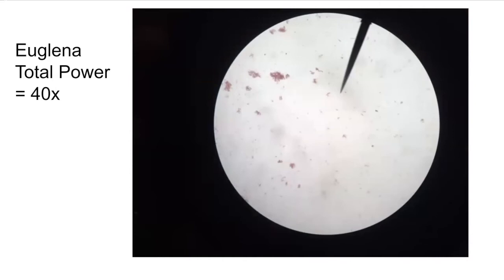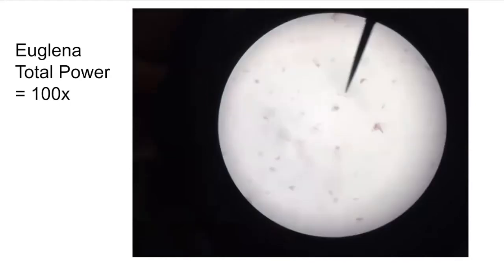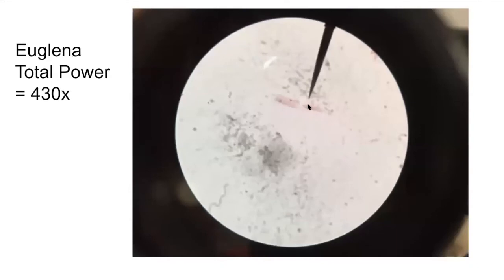If we look at the Euglena on low power, they appear red. But Euglena are really green — these lost their chlorophyll during the preservation process, giving them a pink color. Keep in mind, Euglena are photosynthetic and are usually going to be green. As we increase magnification, we see them get bigger and bigger. They are the smallest protists we're looking at. You can see they have a nucleus, and on the non-pointy end they have a flagella — a long tail that spins like a propeller and helps them swim through their environment.